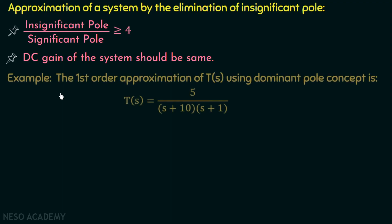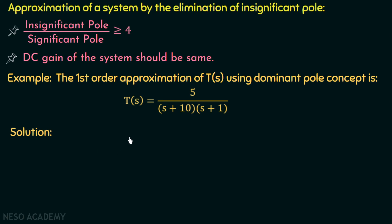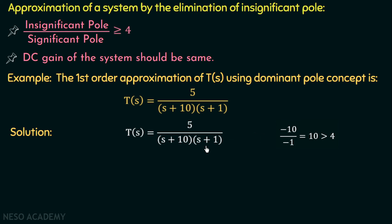Let's apply this to our example. The first order approximation of T(s) = 5/[(s+10)(s+1)] uses the dominant pole concept. This second order transfer function has one pole at s = -10 (insignificant) and one at s = -1 (dominant). Checking condition 1: the ratio of the pole positions is 10/1 = 10, which is definitely greater than 4. So condition 1 is satisfied.